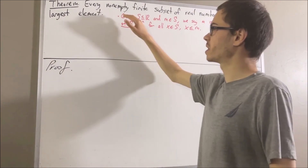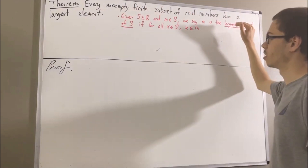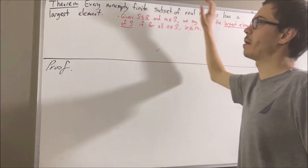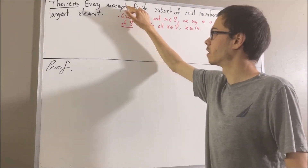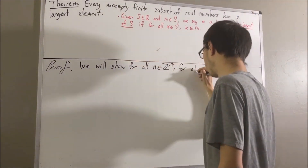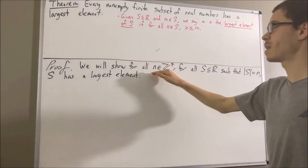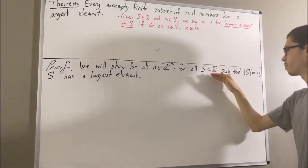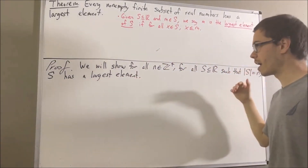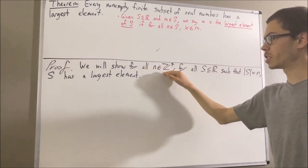Notice we're trying to prove a statement about every non-empty, finite subset of real numbers, which means we're proving a statement about every subset of real numbers that has a positive integer number of elements in it. So we're going to prove: for all positive integers n, and for all subsets of real numbers s with n elements, s has a largest element. Since we're trying to prove a statement about every positive integer, let's use induction.